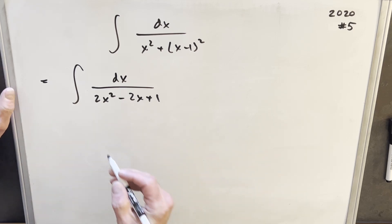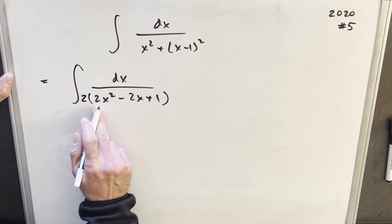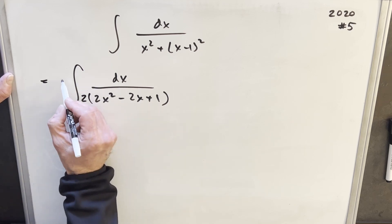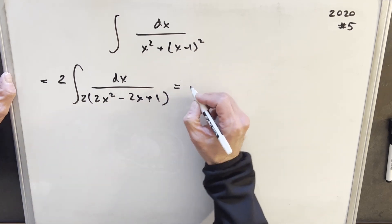But before I do that, I just want to multiply a 2 on this so that I get a perfect square for the first term. So I'm not changing it, I'll multiply a 2 in the numerator as well.